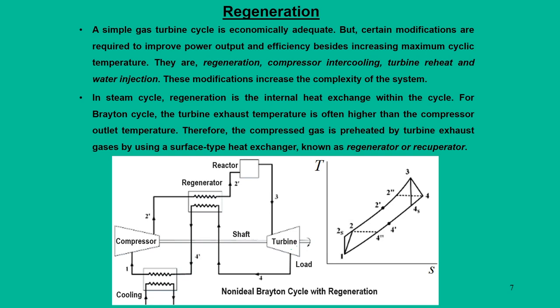Non-ideal cycles offer a better approach for improving cycle efficiency and work output. There are four modifications done to a conventional Brayton cycle: first is regeneration, second is compressor intercooling, third is turbine reheat, and fourth is water injection. We mainly concentrate on regeneration, compressor intercooling, and turbine reheat. Water injection is also used for improving work output and is mainly applied in aircraft engines.